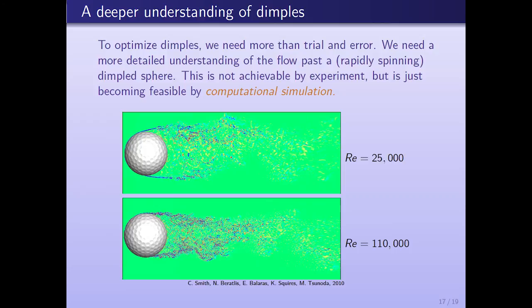If we want to answer that question, we need more than mathematical analysis. The mathematical models available are sufficient, but they can't be solved analytically. In fact, the key one is the Navier-Stokes equation, and there's a million dollar prize offered for anyone who can even prove that it has a solution that lasts for all time. But what we can do is use computational simulation. These pictures show some state-of-the-art computational simulations of a golf ball — the flow past a dimpled golf ball at fairly high speeds, getting into the range of a real golf ball. Unfortunately the golf ball is not spinning, which means lift is missing entirely, so this is not quite sufficient, but it's a great start by the group of Kyle Squires et al.